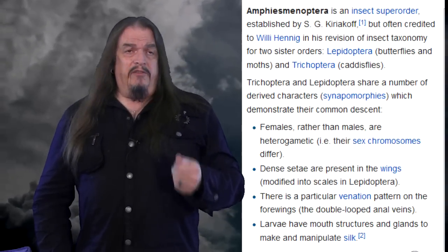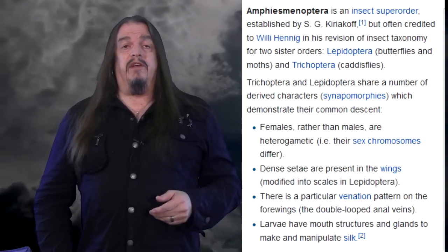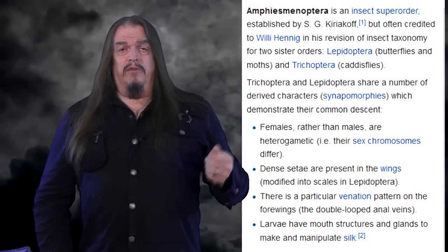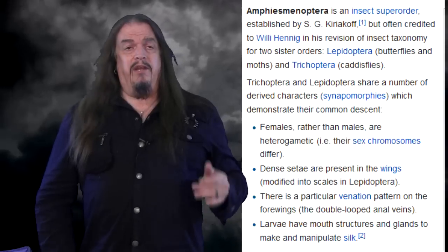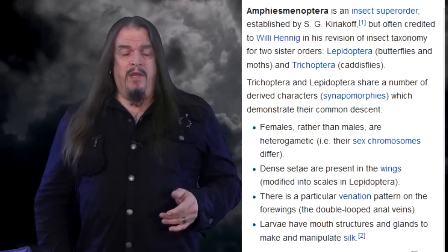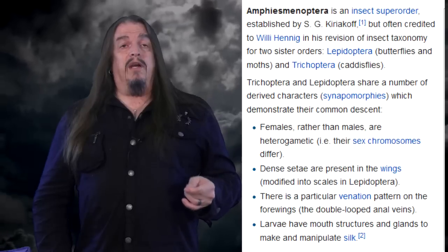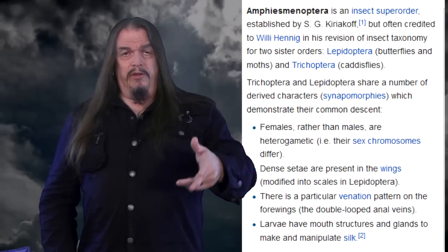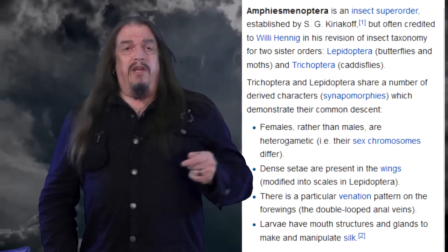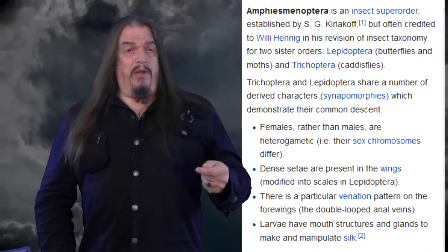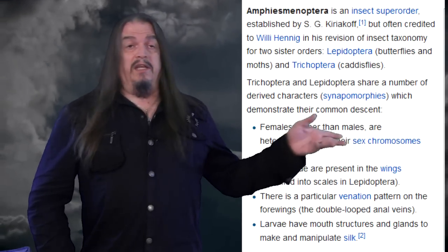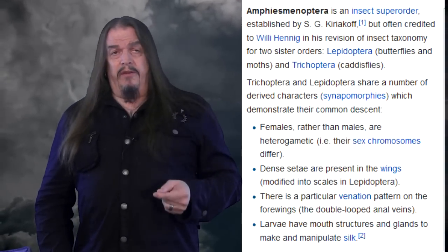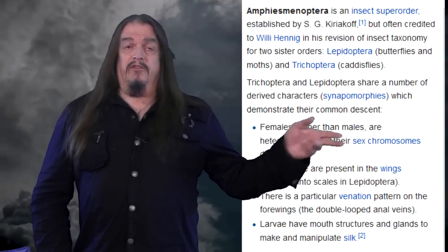For example, in 'A Classification of the Lepidoptera and Related Groups,' we read that Amphiesmenoptera is an insect super-order composed of two sister orders: Lepidoptera — that's butterflies and moths — and Trichoptera — that's caddisflies. Trichoptera and Lepidoptera share a number of derived characters called synapomorphies, which demonstrate their common descent. Synapomorphies are characteristic traits shared by both parent and daughter clades, evidently inherited from a common ancestor. Those shared inherited traits include: females rather than males being heterogametic, meaning their sex chromosomes differ.